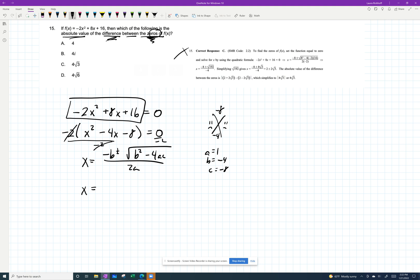Excellent. I'm going to go with these guys. I'm going to have negative B, so that'll be positive 4 plus or minus. B squared is 16 minus 4 times 1 times negative 8, all over 2 times 1. Simplifying the inside of the square root, we'll have 16 plus 32, which is 48.